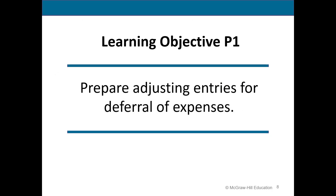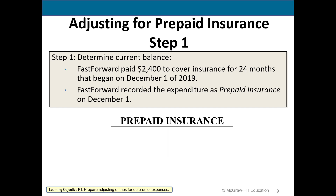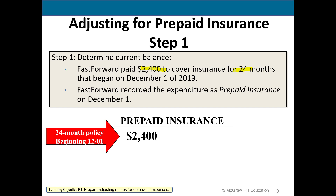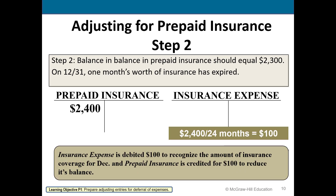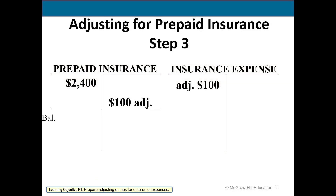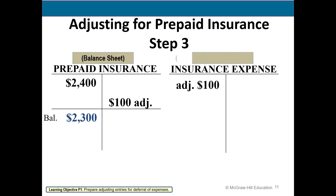We will look at deferral of expenses — prepaid insurance. If they pay $2,400 for 24 months, each month $100 will be recorded as an expense. Initially the full amount is recorded in the asset account prepaid insurance, and then each month $100 will be recorded in the expense account and $100 will be reduced from the prepaid insurance account, so the balance in prepaid insurance becomes $2,300 after $100 has been deducted.